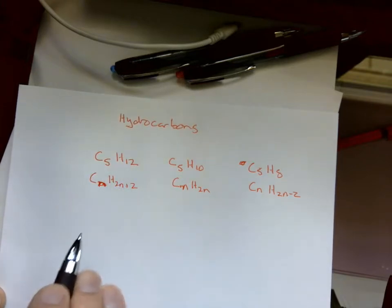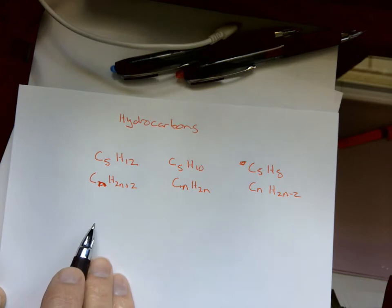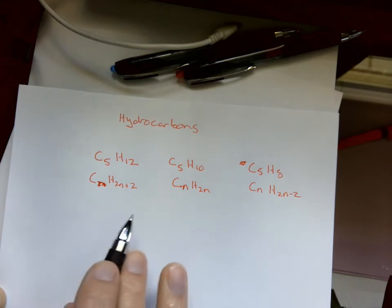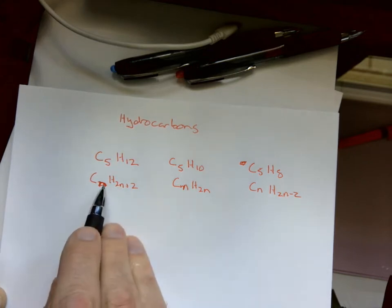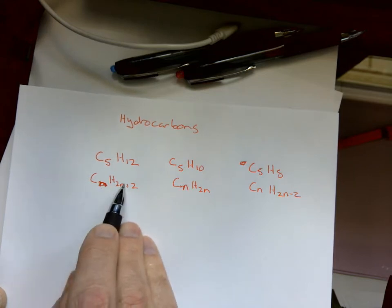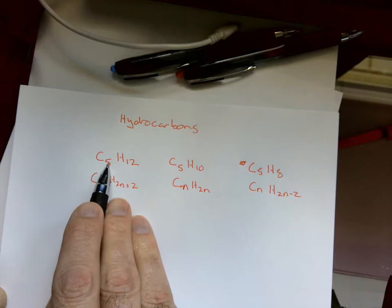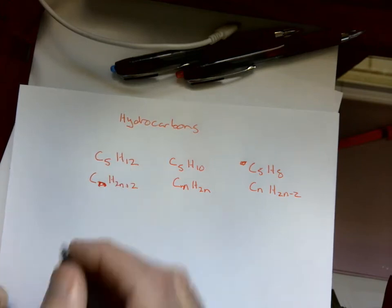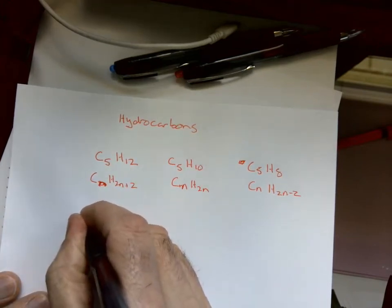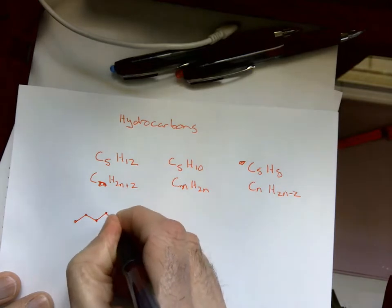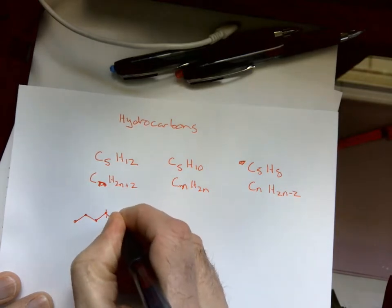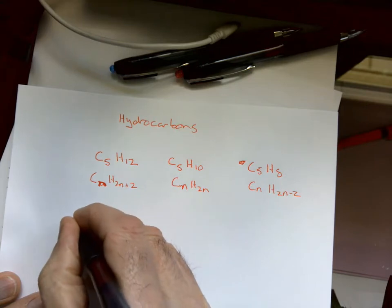C5H12, this means that it's all single bonds. And how do I know it's single bonds? Anytime that the hydrogen number is twice the carbon number plus 2, so 5 times 2 is 10 plus 2 is 12, just showing all the hydrogens there.